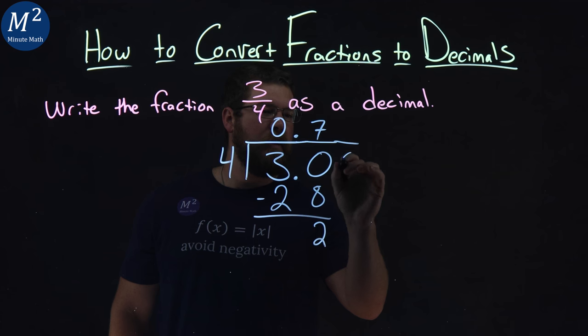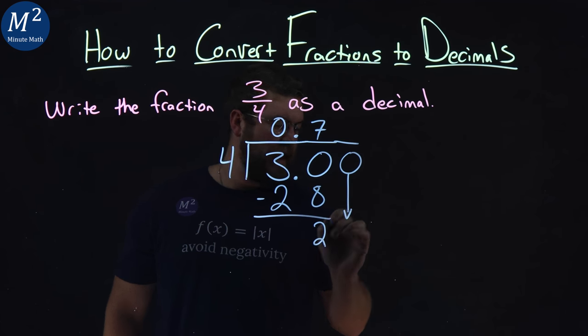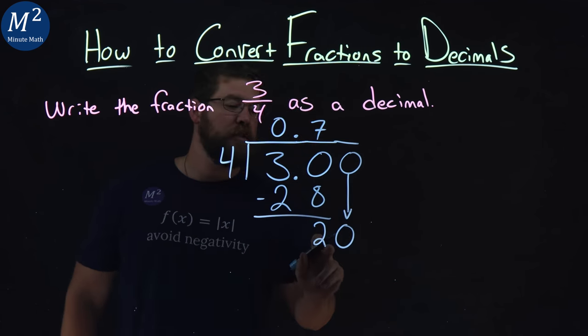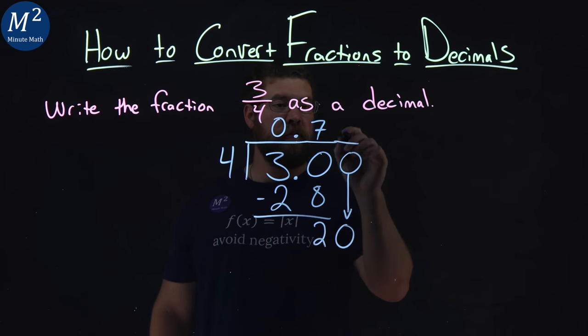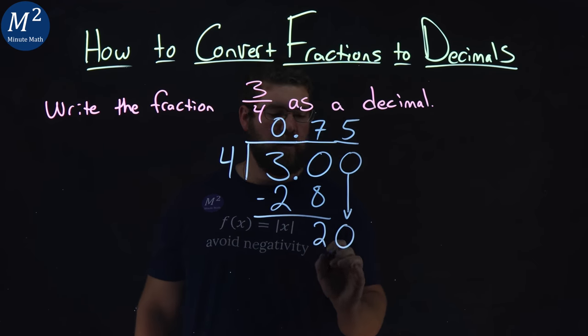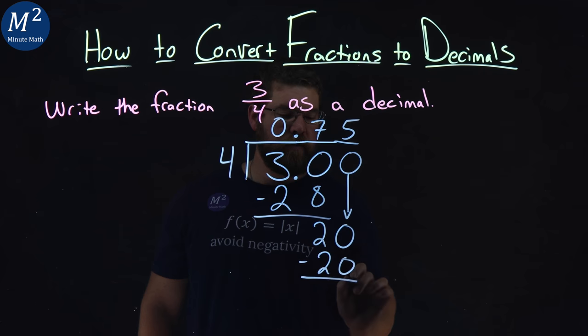Let's add another place value, zero here, bring that down. Four goes into 20 now. That's going to be five times, because five times four is 20. Subtract the two numbers, and 20 minus 20 is zero.